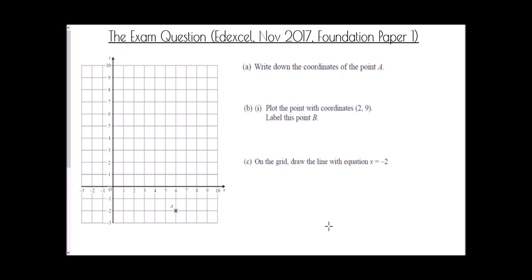Now the exam question — from the NXGL paper, November 2017, Foundation Paper 1, no calculator needed. First, we're asked for the coordinates of point A. Starting at zero zero and counting: six to the right and two down gives the coordinate (6, -2). Next, plot point B at coordinate (2, 9): start at zero zero, move two to the right and nine up, mark a cross, and label it B.